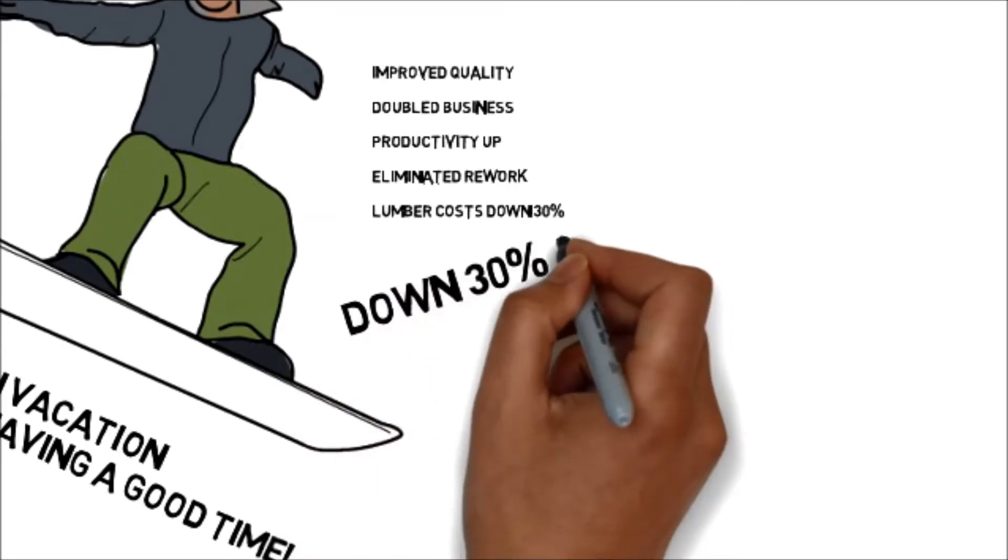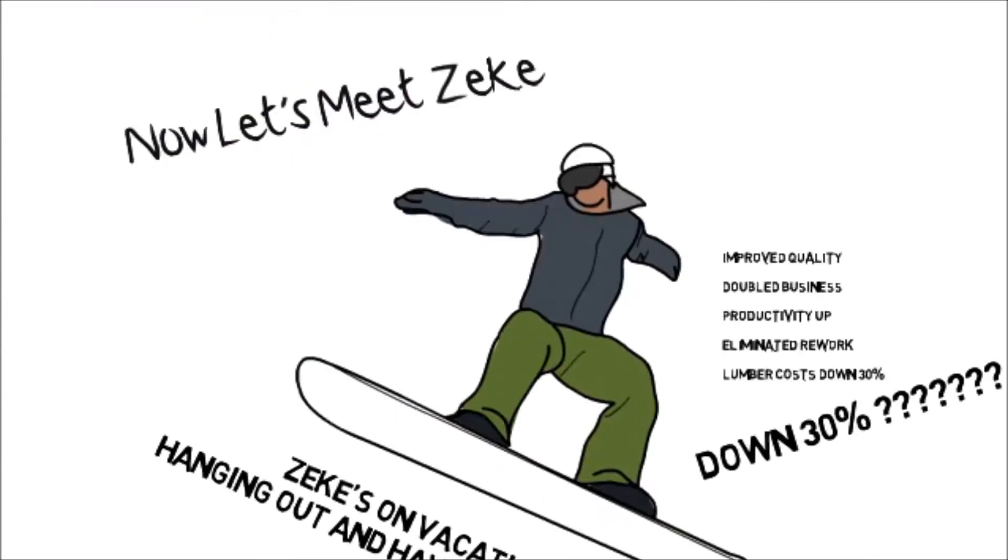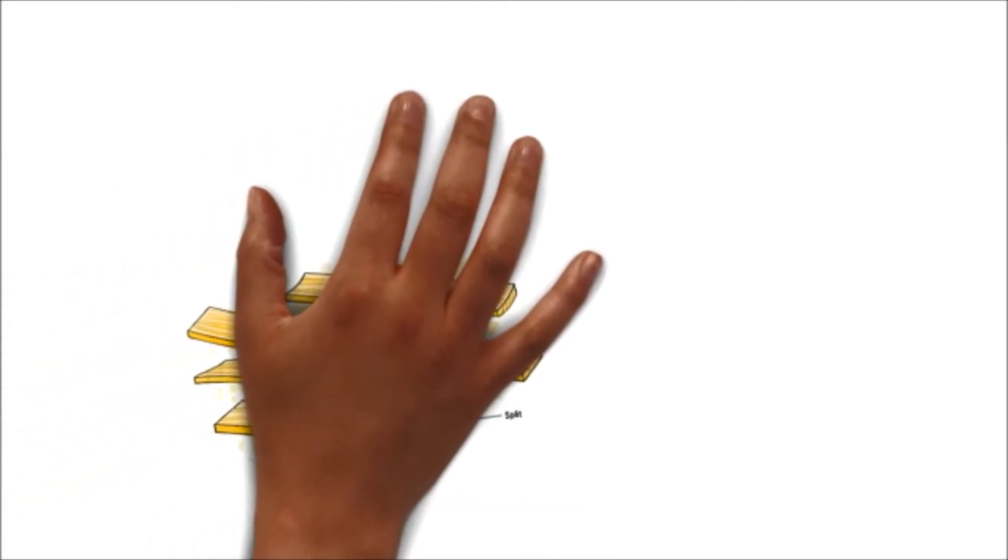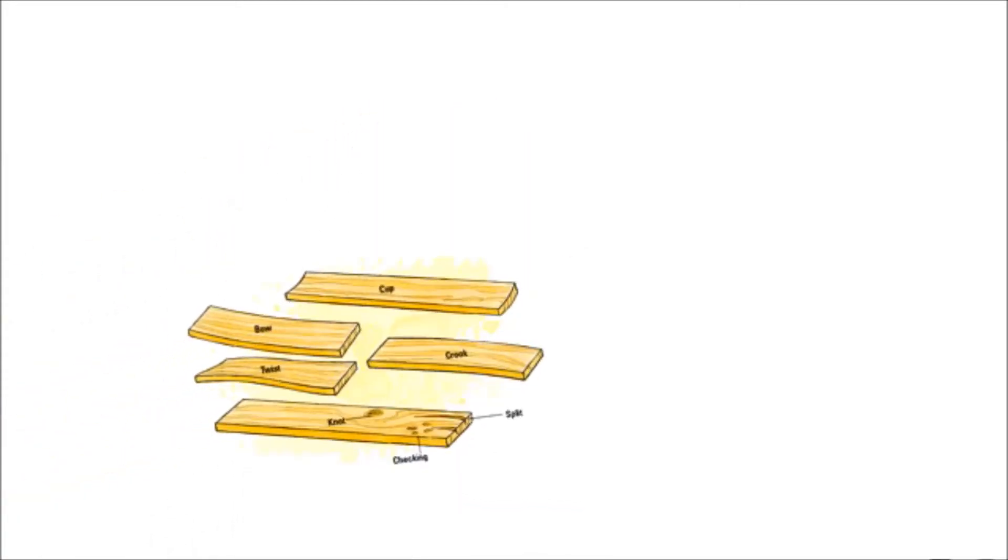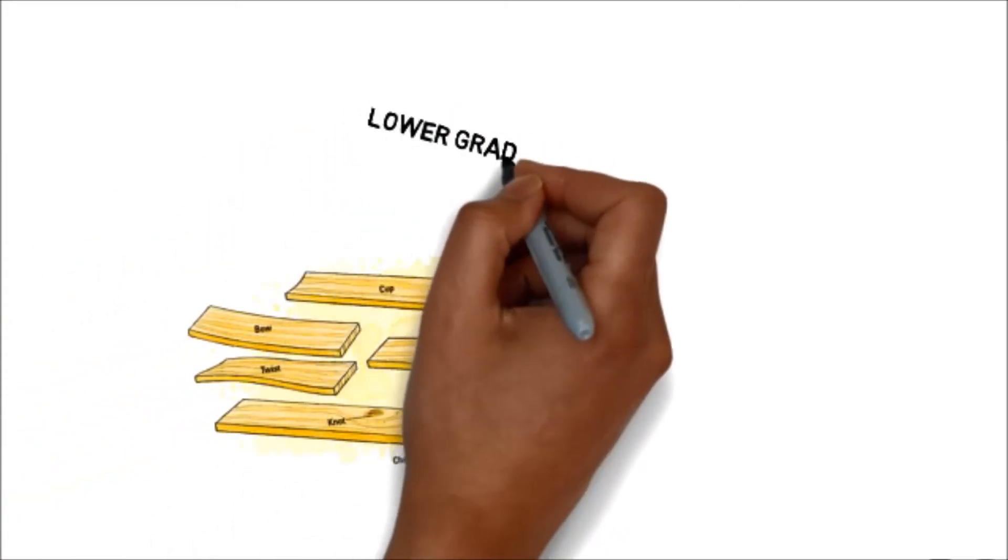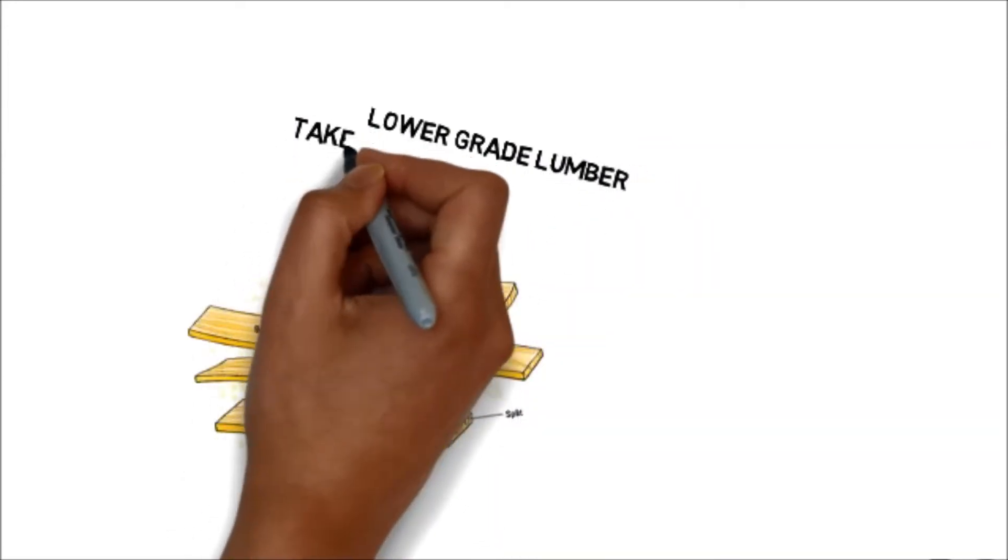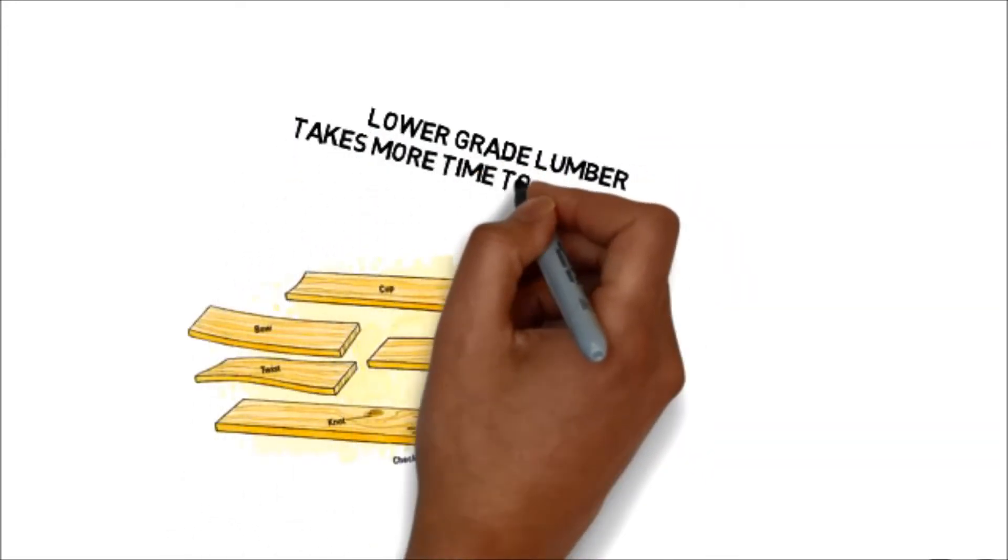Noah is shocked and confused. How have you been able to do that? Zeke explains, well you know, chasing after all the high grades with everybody else is just dumb and costs a fortune. Just look at your lumber bills. I started using lower grade lumber. It costs a whole lot less.